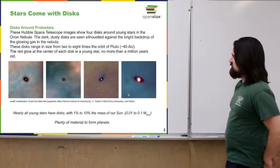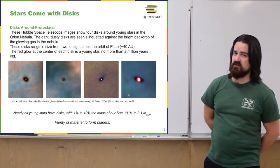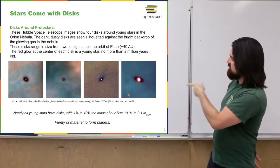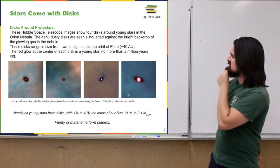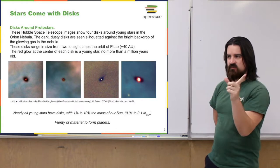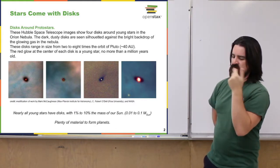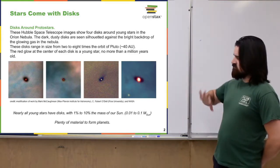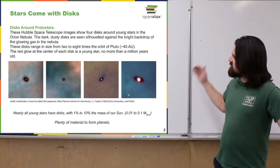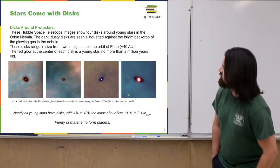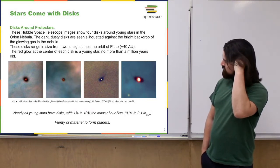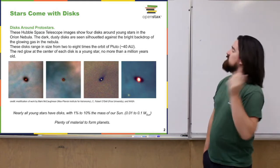Usually the star is pretty young — not more than a million years old. The discs are pretty large; each of these discs is something like two to eight times the orbit of Pluto, which is roughly 40 astronomical units — 40 times the distance the Earth is from the Sun. So that works out to about 80 to 320 astronomical units. Very large.